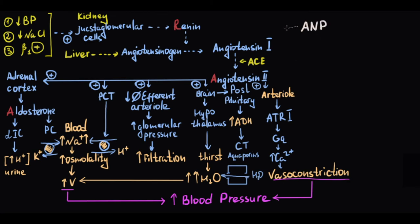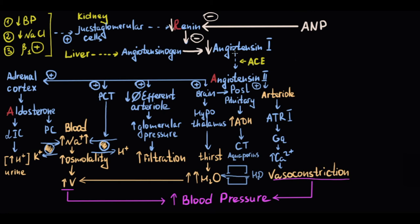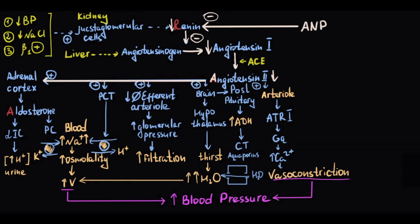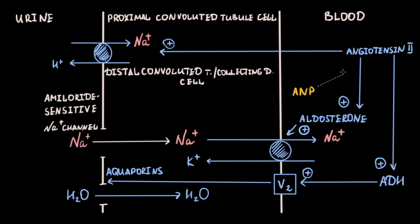Atrial natriuretic peptide can inhibit the release of renin from juxtaglomerular cells, meaning conversion of angiotensinogen to angiotensin-1 decreases. Therefore, the concentration of angiotensin-2 decreases too, leading to inhibition of angiotensin-2-stimulated aldosterone release. This leads to decreasing hydrogen ion concentration in the urine, and by blocking the sodium-potassium exchanger in principal cells, decreases sodium reabsorption and increases sodium concentration in the urine — a process called natriuresis.